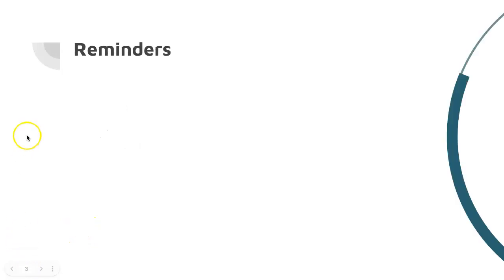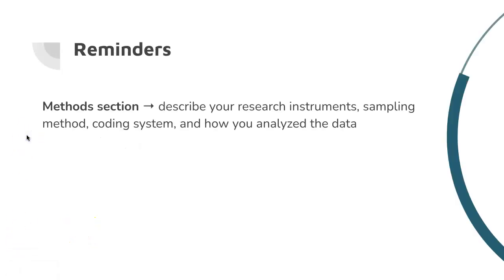So first just a few reminders about the different sections. The methods section is where you are describing your research instruments, your sampling method, your coding system, and how you analyze the data. The goal here is to describe everything with detail so that a researcher could replicate your study just from reading your methods section.